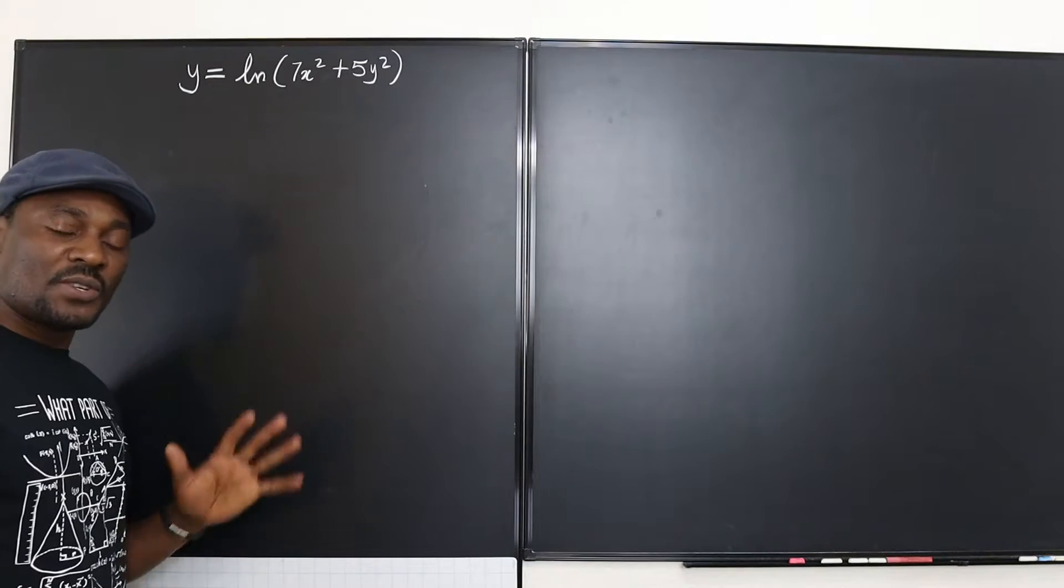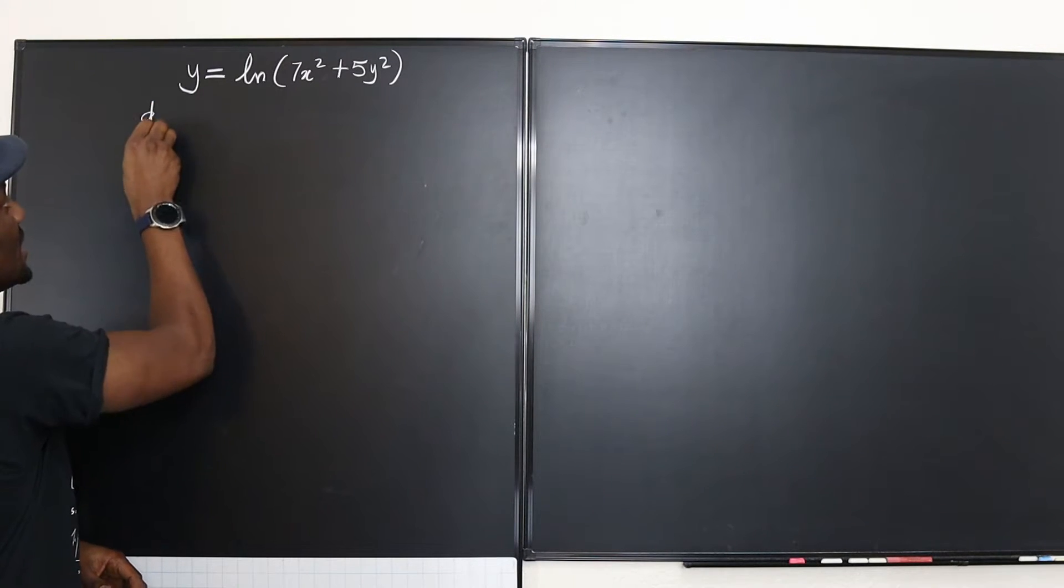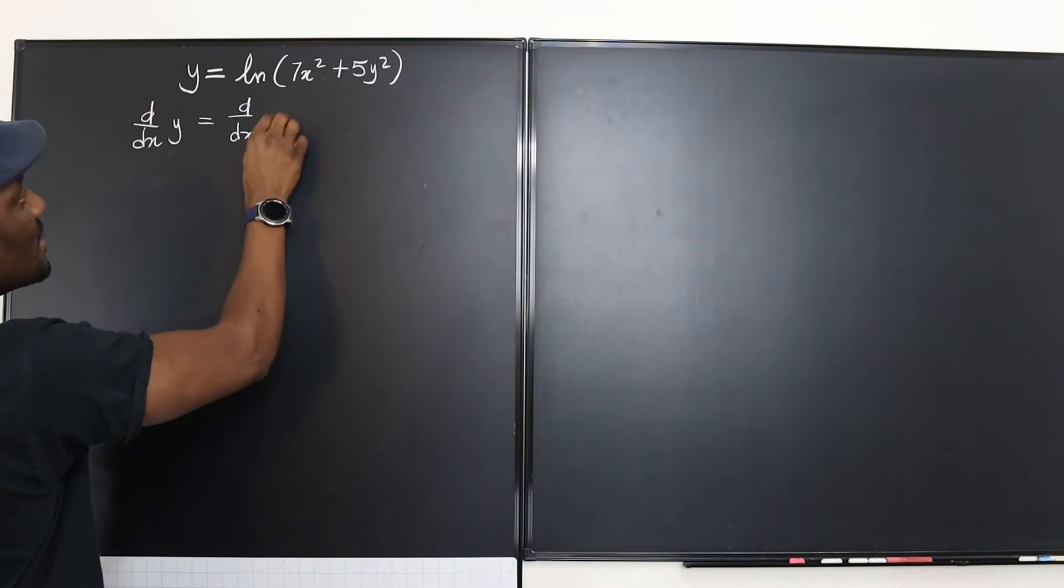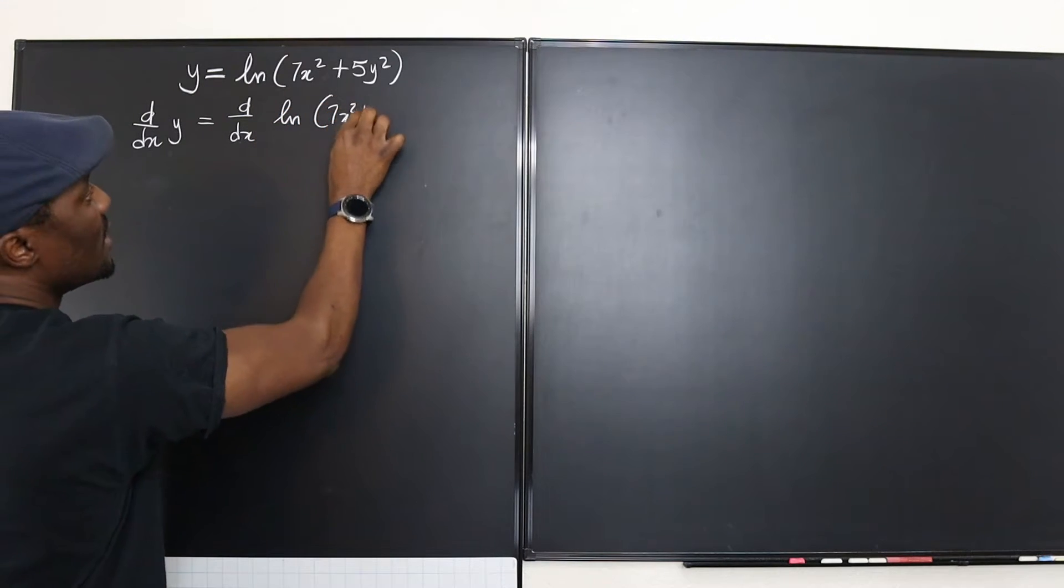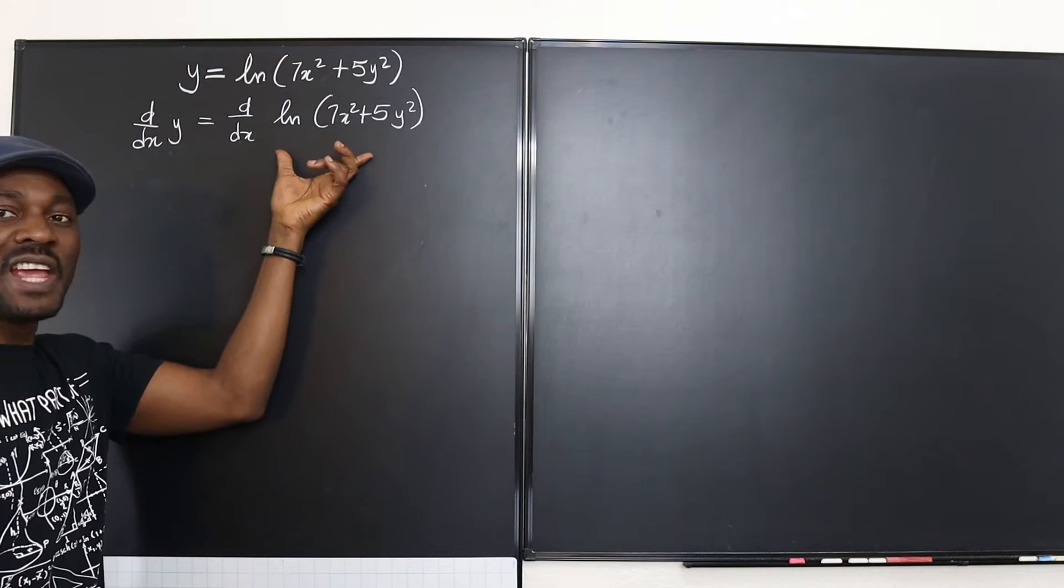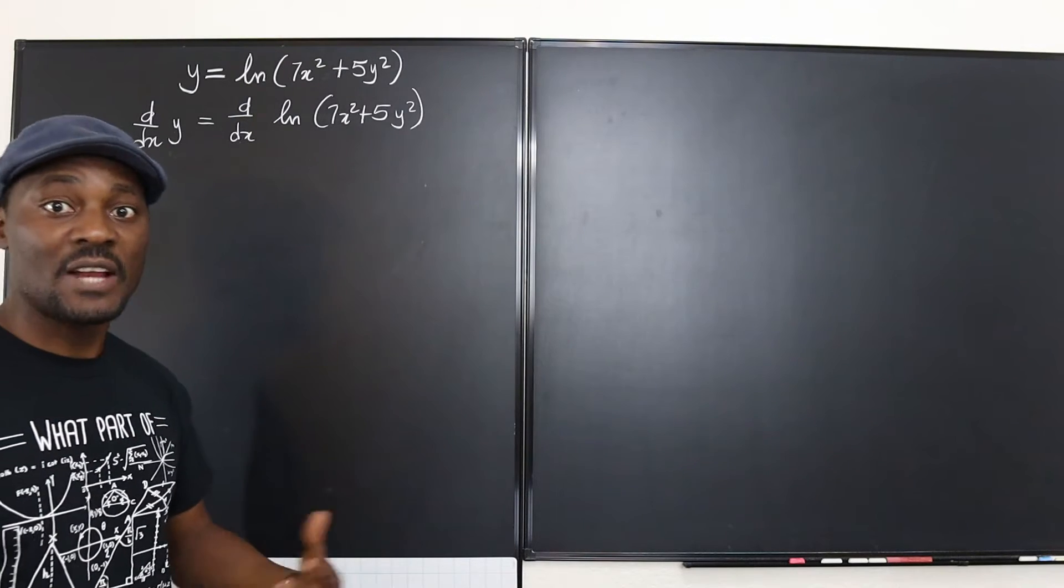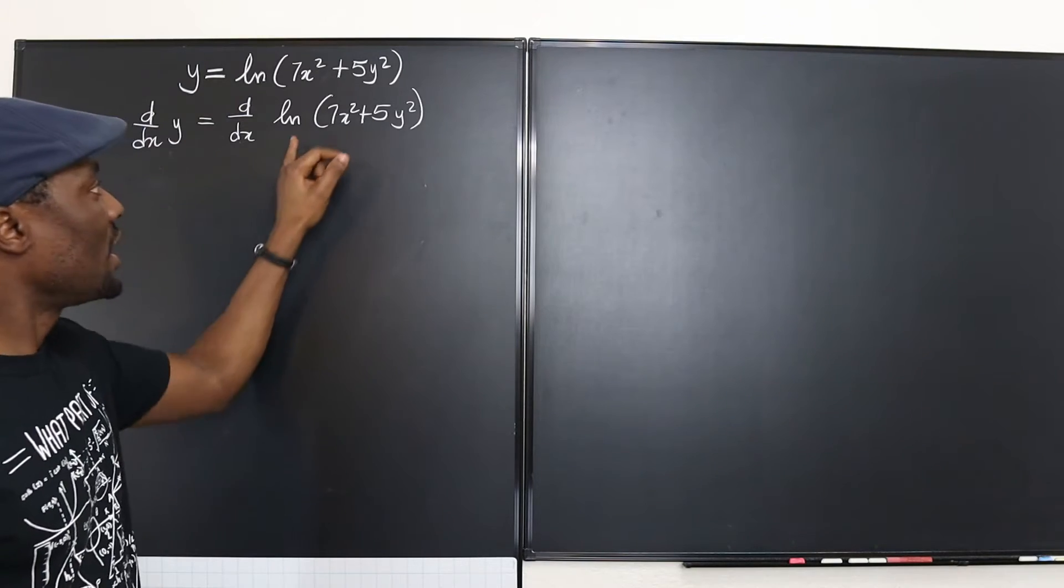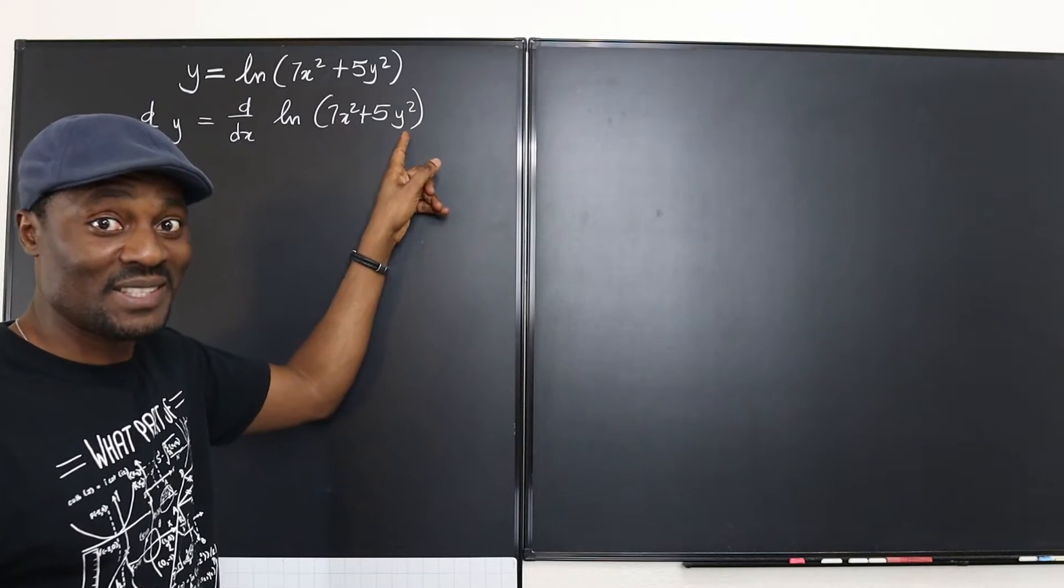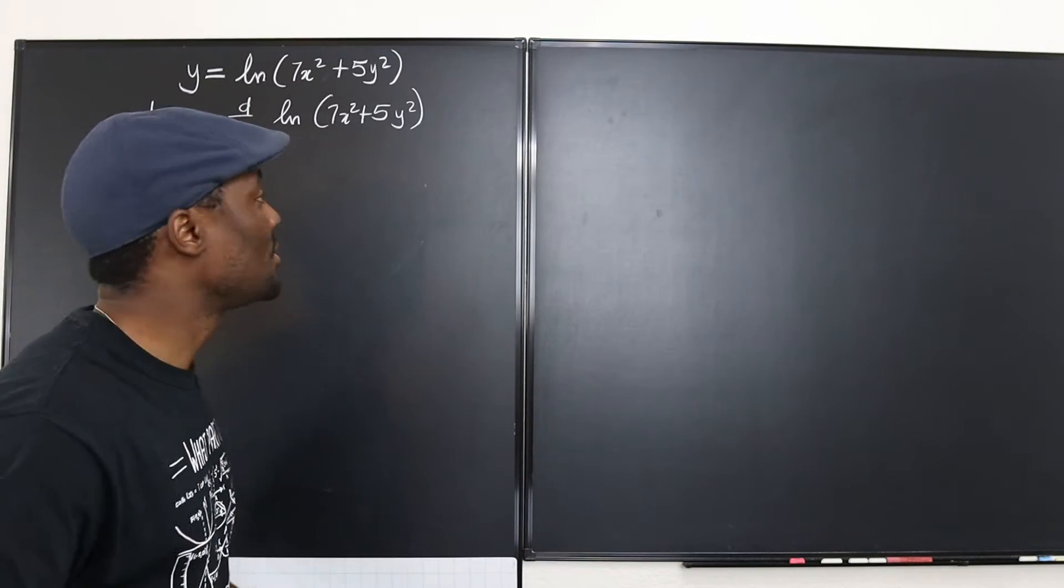So let's do it. So the first thing we're going to do is just take the derivative of both sides. So we're going to say d/dx of y will be equal to d/dx of ln(7x² + 5y²). Now remember when you differentiate a natural log function, what you get is 1 over the argument of that natural log function. And then you stop there unless the argument itself is another function. And as you can see this is a function, actually a complicated function. So we have to use the chain rule.